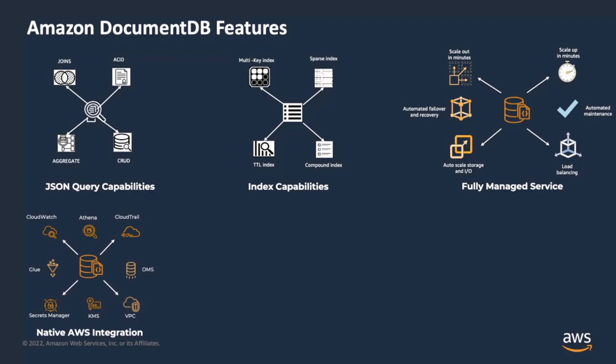Native integration with other AWS services is super important because it helps make your tech stack very simple. DocumentDB integrates with CloudWatch for monitoring and alarms, CloudTrail for auditing, Athena for running SQL queries, Secrets Manager for credential management, VPC for secure deployment, DMS for data migration, Glue for ETL jobs, and KMS for encryption key management. We also have AWS Backup integration.